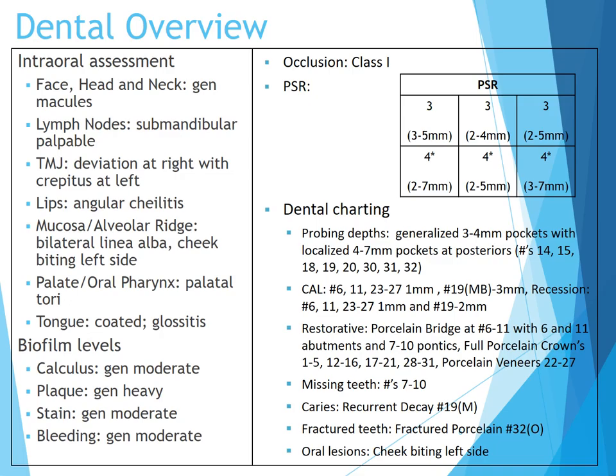For the PSR, the readings for the sections are as follows: first — 3, second — 3, third — 3, fourth — 4, fifth — 4, and sixth — 4.